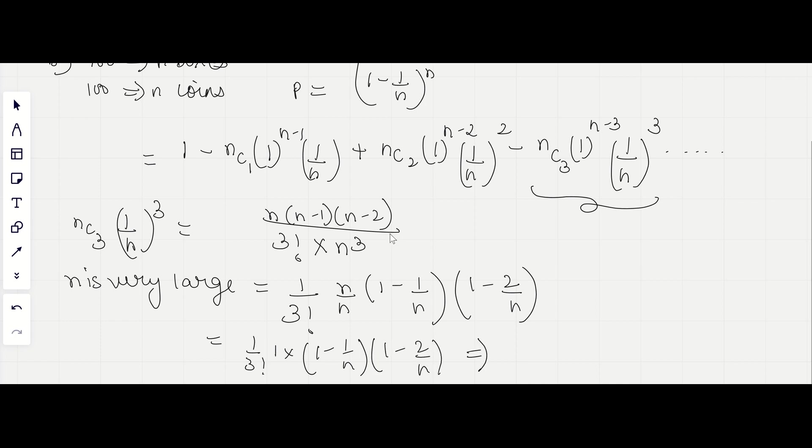And this will reduce to 1 upon 3 factorial into 1, that would be 1 by 3 factorial. So this term reduces to 1 minus 1 by 3 factorial.